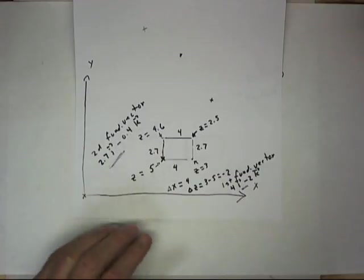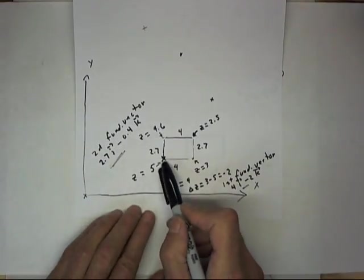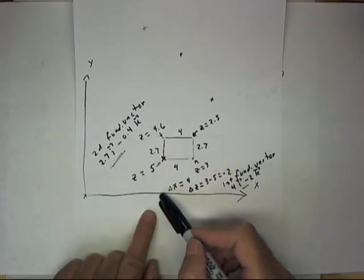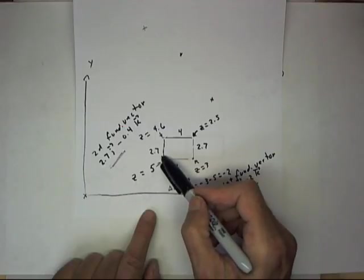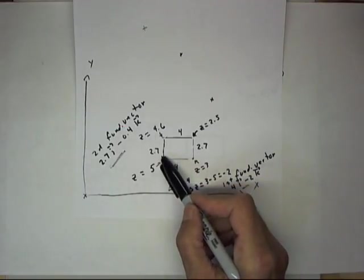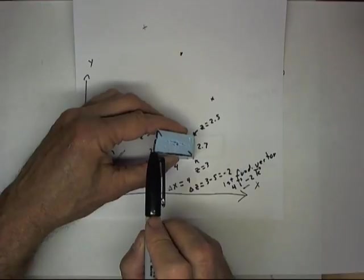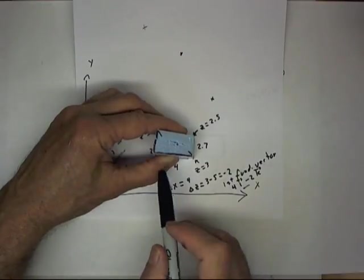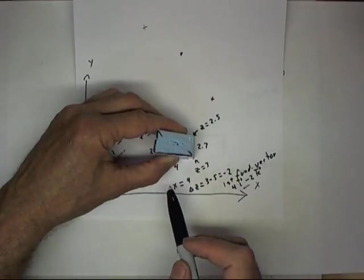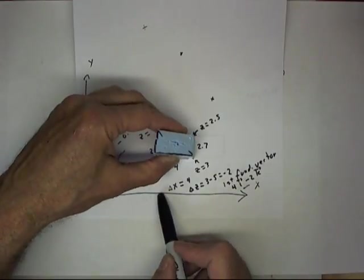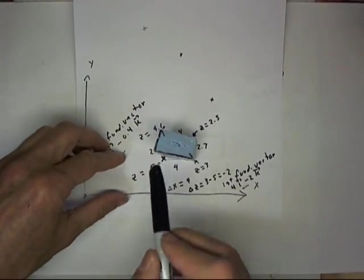And I suppose before I move this I should say that I've estimated the coordinates to this point to be ten units this way, five units this way, and if we want to go to the point at this corner of our fundamental object, we've got to go up five units, so that the coordinates would be ten, five, and five.